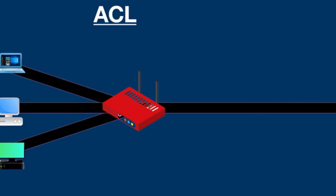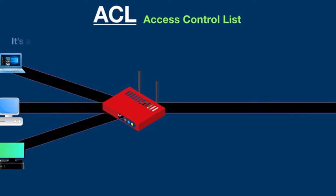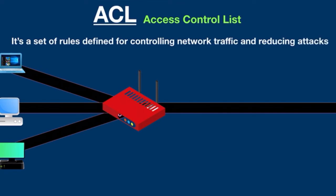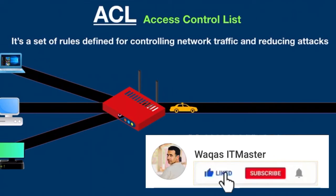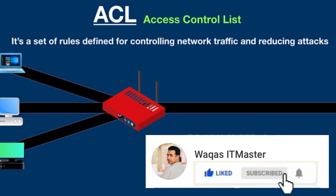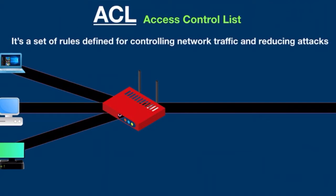Hello everyone and welcome back. What is Access Control List? It's a set of rules defined for controlling network traffic and reducing network attacks. ACL is used to filter incoming and outgoing network traffic based on predefined rules or filtering criteria on a router device. These rules are set by the network administrator.